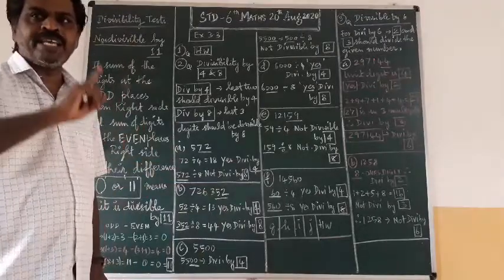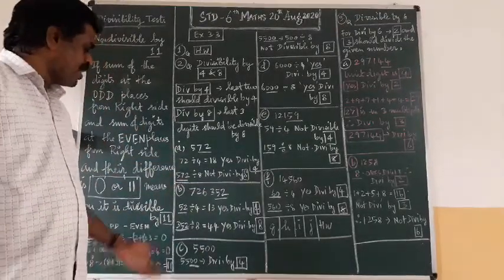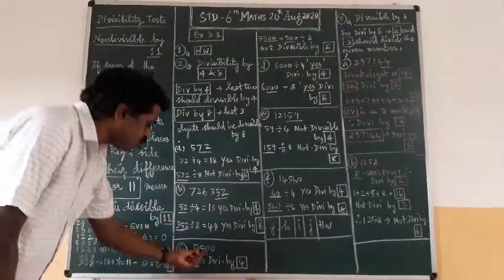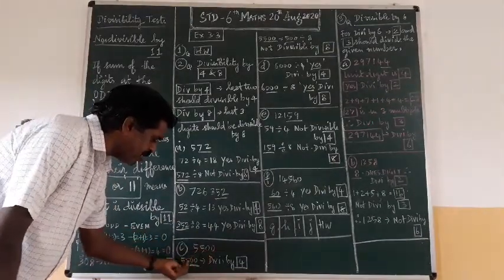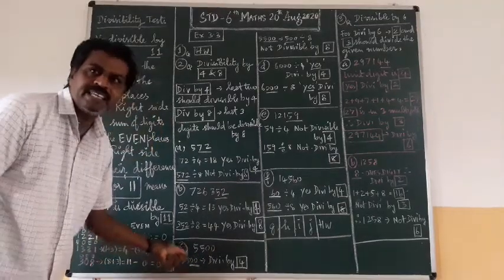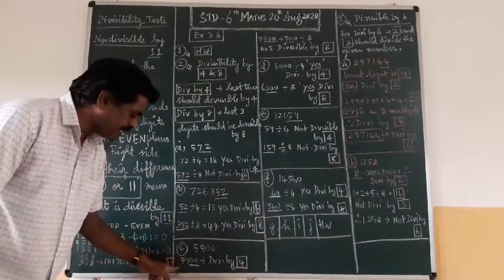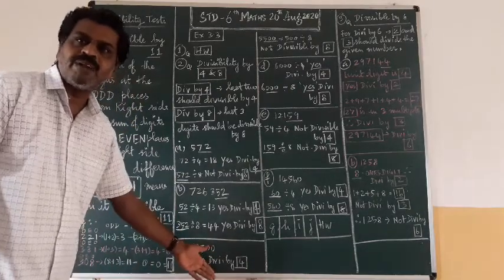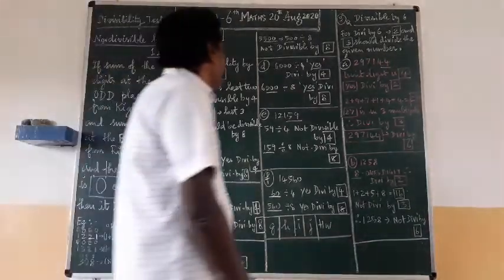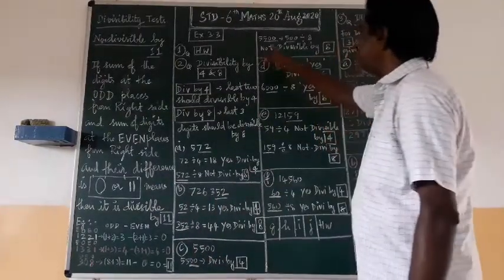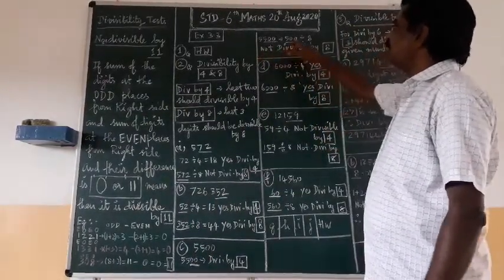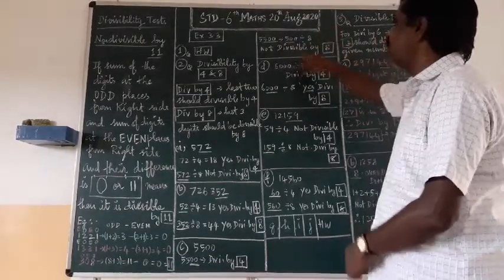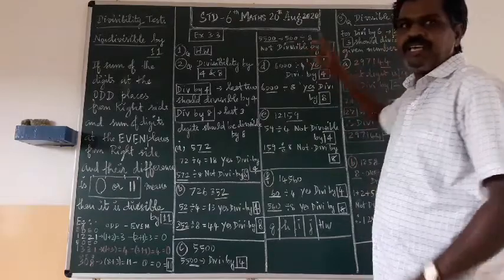Third example: 5500. For divisibility by four, last two digits are 00. Is 00 divisible by four? Yes — 00 ÷ 4 gives remainder 0, so 5500 is divisible by four. For eight, last three digits are 500. Is 500 divisible by eight? No — it does not divide evenly. So 5500 is not divisible by eight.